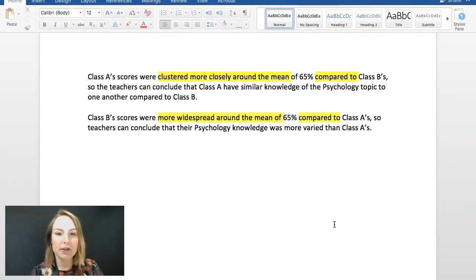So, let's go through two possible answers that you could give. Option number one. Class A scores were clustered more closely around the mean of 65% compared to class B's. So, the teachers could conclude that class A have similar knowledge of the psychology topic to one another compared to class B. That's one possible answer.